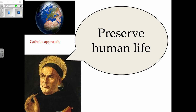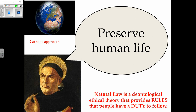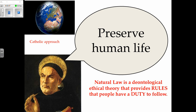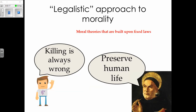In Catholic approaches, for example Aquinas's fifth primary precept is to defend self and the innocent — it is always right to preserve human life, so killing is always wrong. Natural law is a deontological ethical theory providing rules that people have a duty to follow, formulated by the Catholic Church through reason. This is known as a legalistic approach to morality.